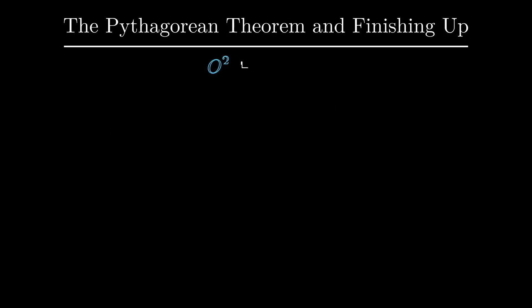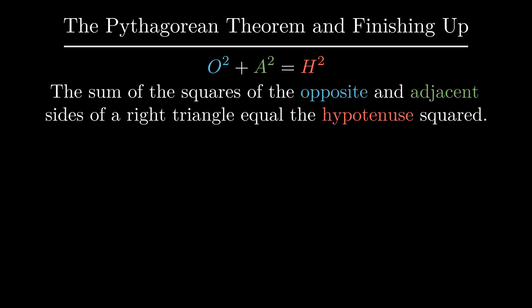The famous Pythagorean theorem from geometry tells us that the length of the opposite squared and the length of the adjacent squared of our right triangle add up to the length of the hypotenuse squared, which is just 1 here.